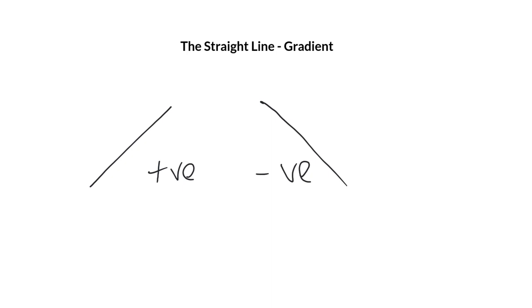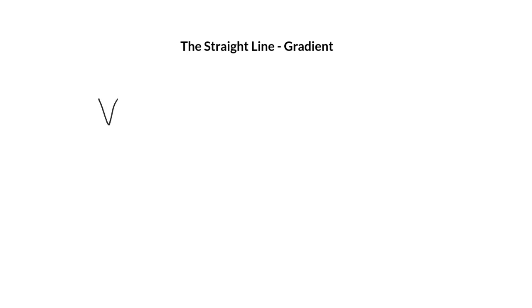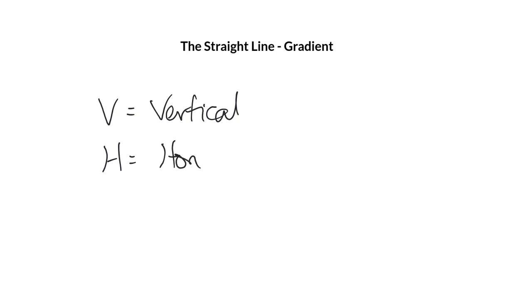Now how steep that line is, is what we're going to look at next, and how we calculate the gradient of that line in numerical terms. There are two elements that contribute to the gradient of a line, or how steep a line is. The first one is a vertical distance, and the second one is the horizontal distance, and that's what we're going to have a quick look at.